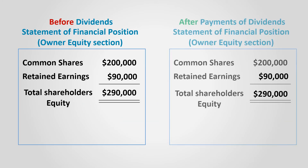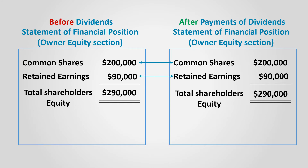Let's compare the shareholders' equity section on the statement of financial position before and after the cash dividends distribution. Common shares are not affected. Let's assume that retained earnings had a balance of $90,000. After the dividends distribution, retained earnings decreased to $70,000 and accordingly, total shareholders' equity is reduced by $20,000 as well.